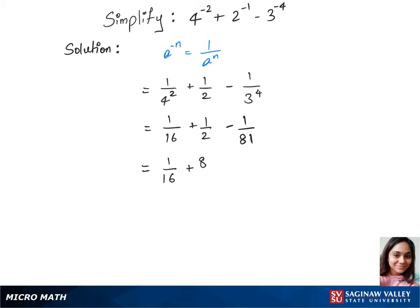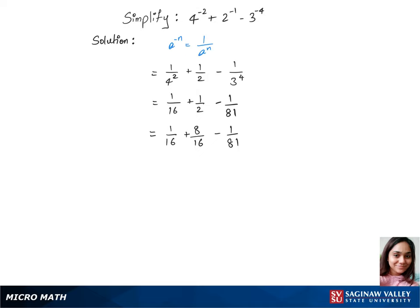Plus this gives us 8 over 16 minus 1 over 81. Let's add up those two fractions first. That gives us 9 over 16 minus 1 over 81.